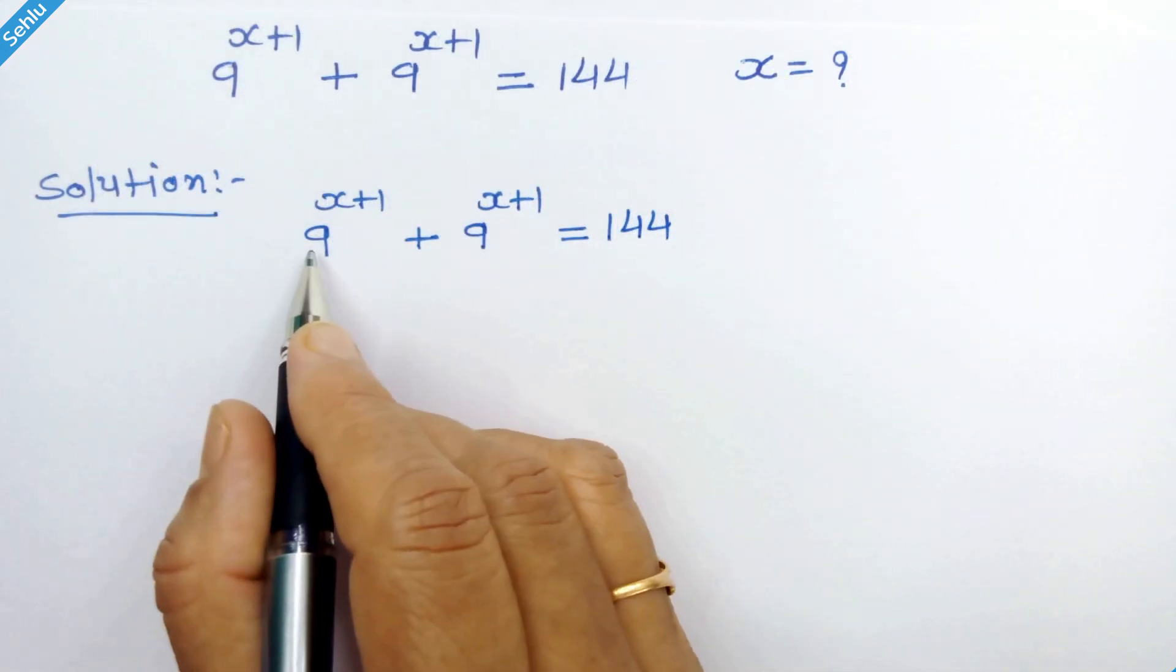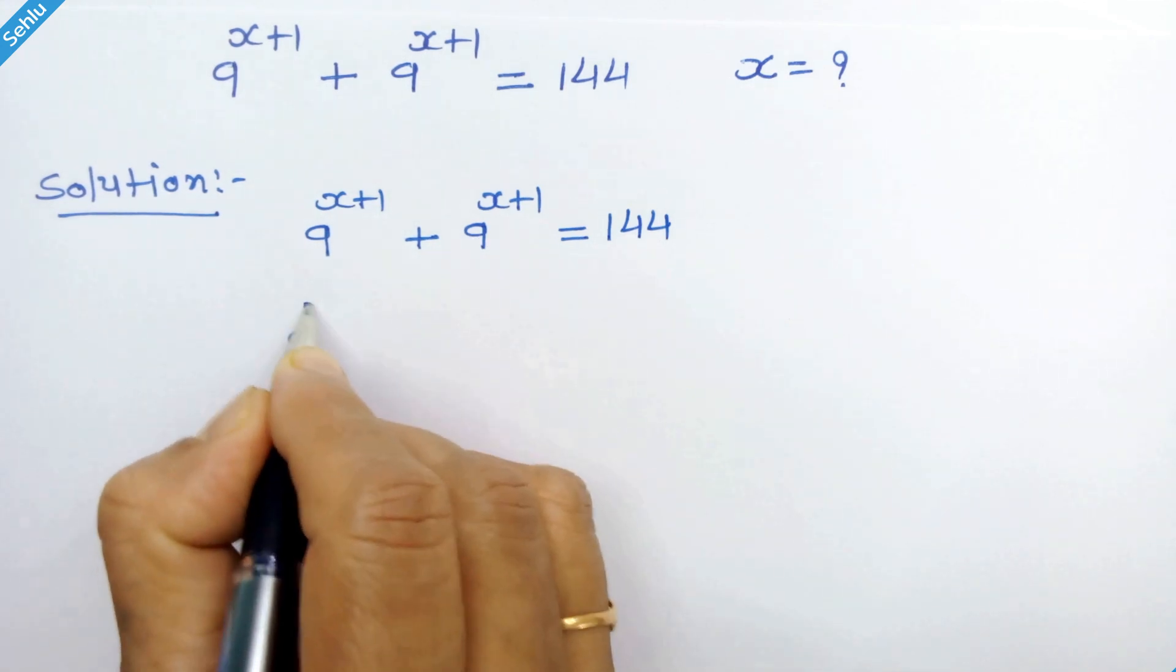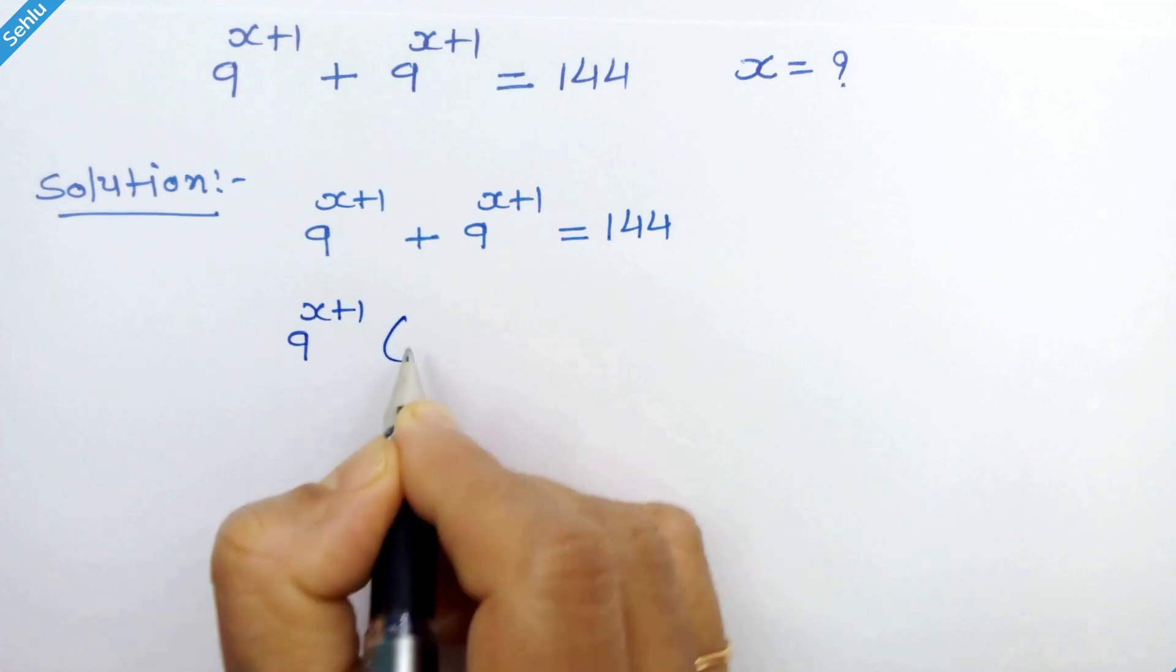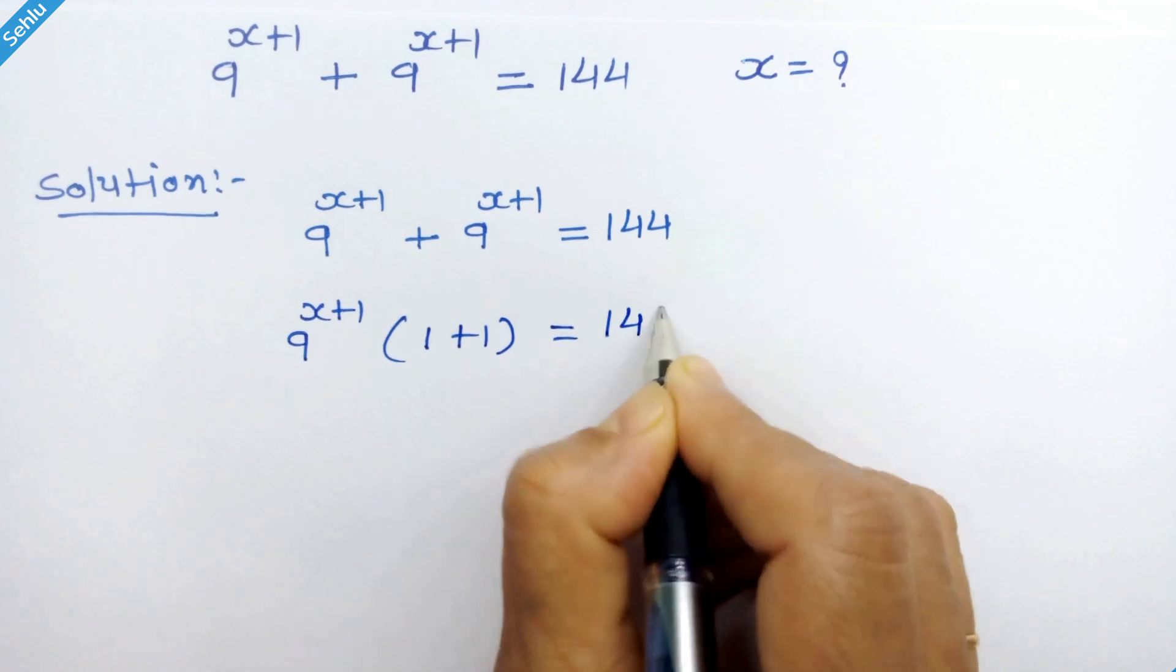On the left hand side we have 2 times 9 raised to x plus 1. So we can simply factor out 9 raised to x plus 1. So we have 1 plus 1 in the bracket is equal to 144.